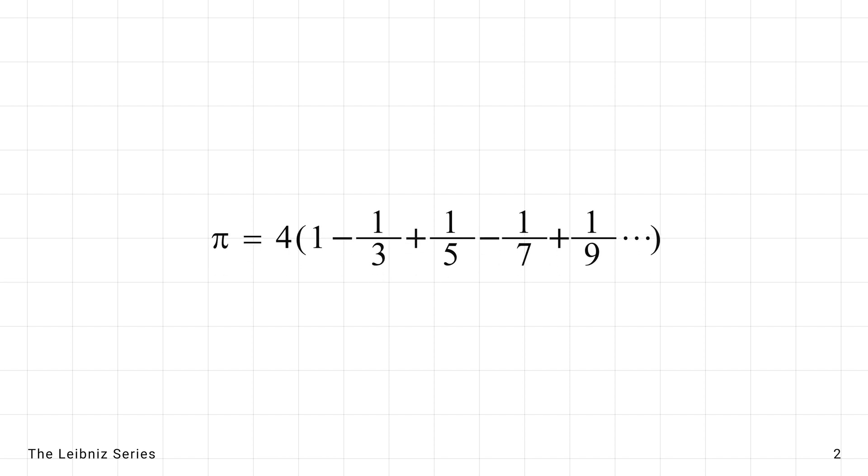This series expressed pi as 4 multiplied by an alternating sum. Although it converges slowly, its simplicity makes it a favorite among mathematicians.